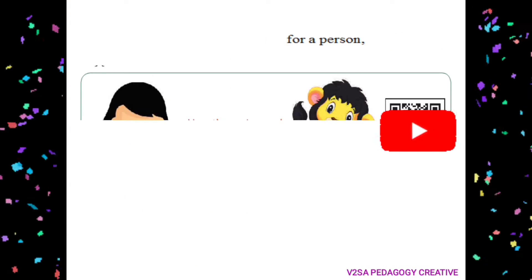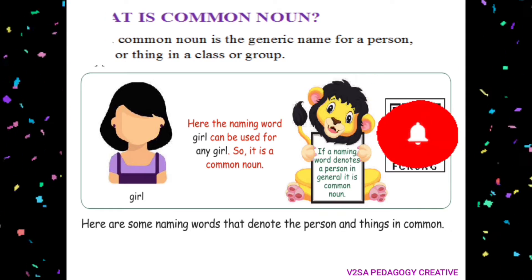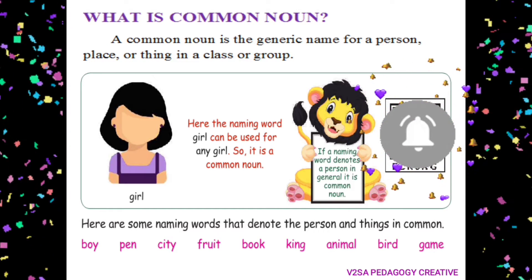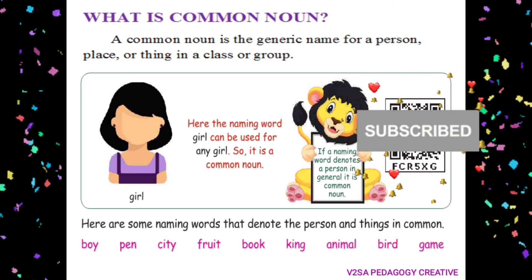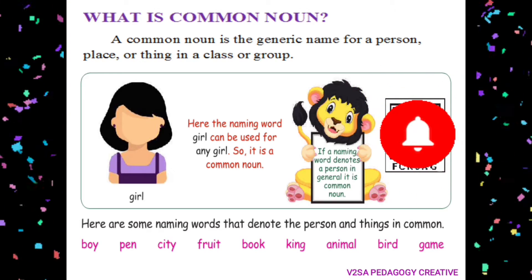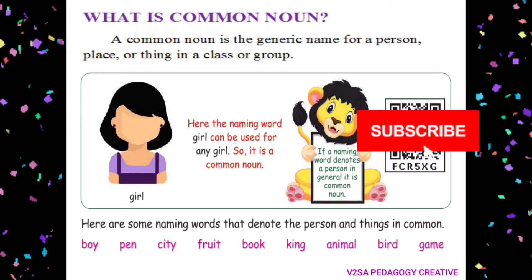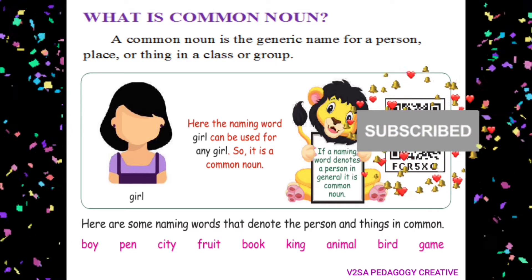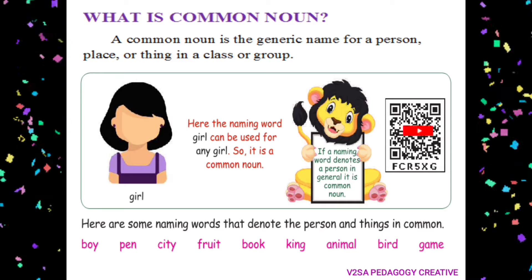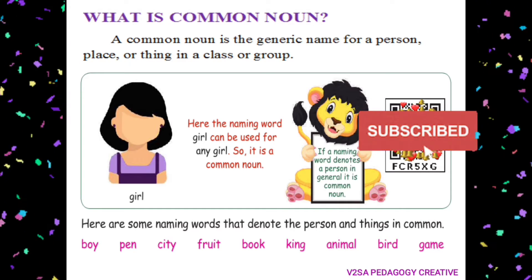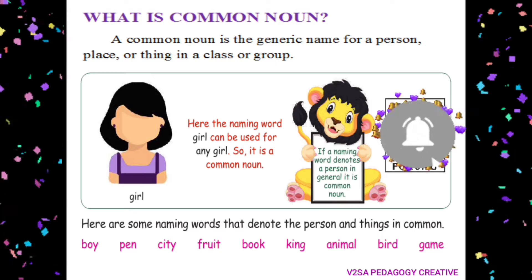What is the grammar? Grammar is the generic name for a person, place or thing in a class or group. That is the common noun. The common noun is the generic name for a person, place or thing in a class or group. So, it is a common noun.